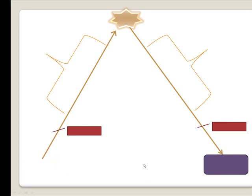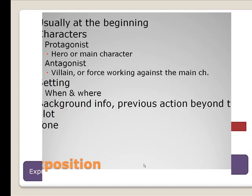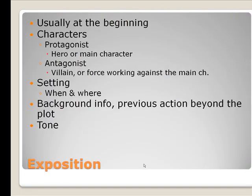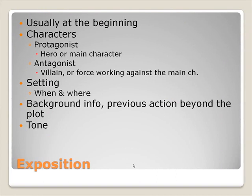The Freytag Pyramid begins with exposition, which is usually at the beginning. In the exposition, we learn who the characters are. The protagonist is the hero or main character — though that doesn't necessarily mean he or she is a good person, just that they are the main character the story revolves around. The antagonist is also generally revealed, which is the villain or force working against the main character — it may not necessarily be a person. The setting is also revealed: where and when the story takes place — time of day, time in history, time of year, location such as a country, city, particular room, or even a different world.